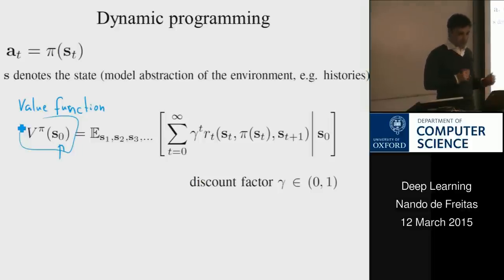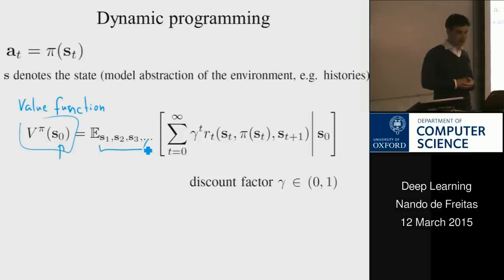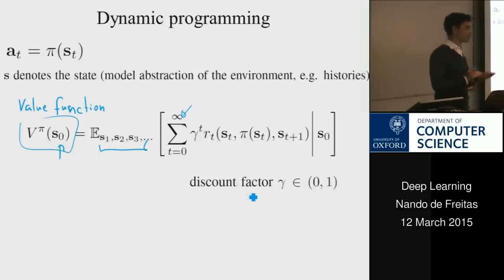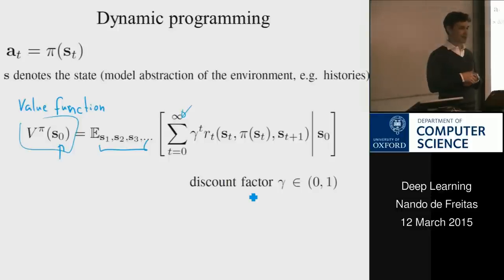We don't know what the future states will be, so we need to compute the value regardless of what those future states are — we have a sum over all possible future states. This sum can go to infinity, so if you're summing rewards to infinity you might think that's going to blow up. To prevent that, we introduce a quantity called the discount factor.